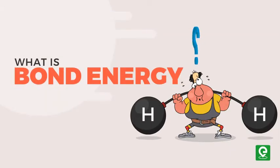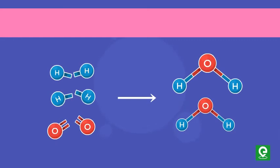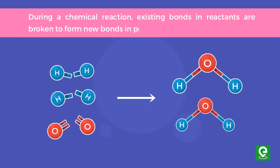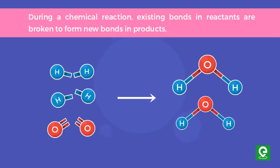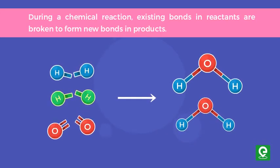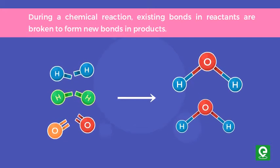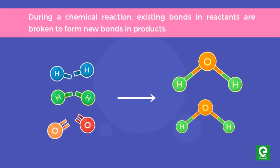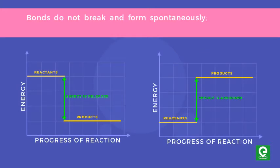What is bond energy? During a chemical reaction, existing bonds in the reactants are broken to form new bonds in the products. For example, the bonds present between two hydrogen molecules and one oxygen molecule are broken to form the new oxygen-hydrogen bonds present in two molecules of water. Bonds do not break and form spontaneously; an energy change is required for this to happen.